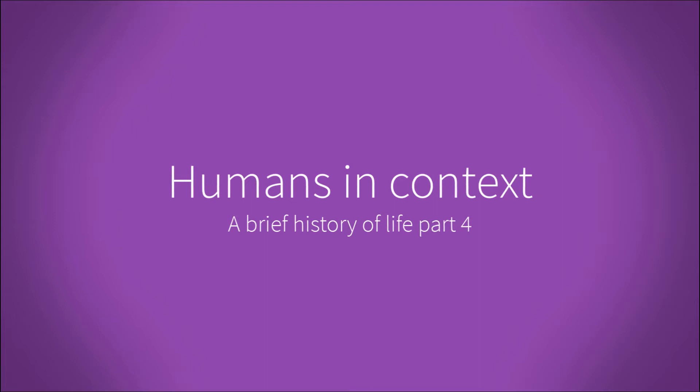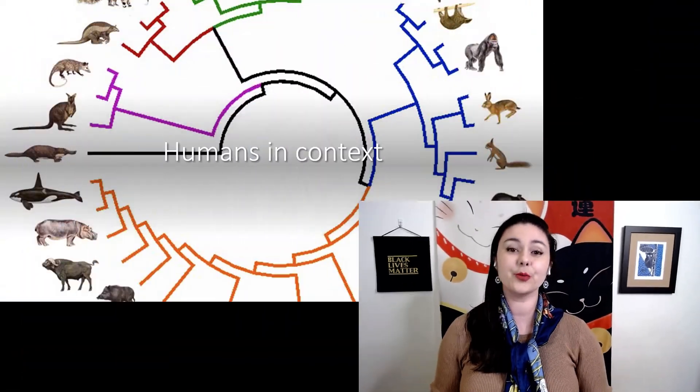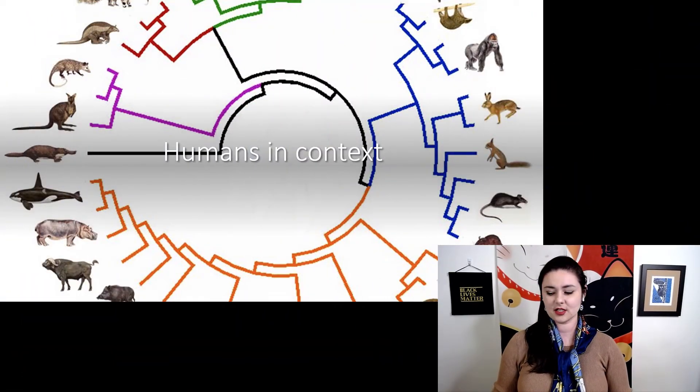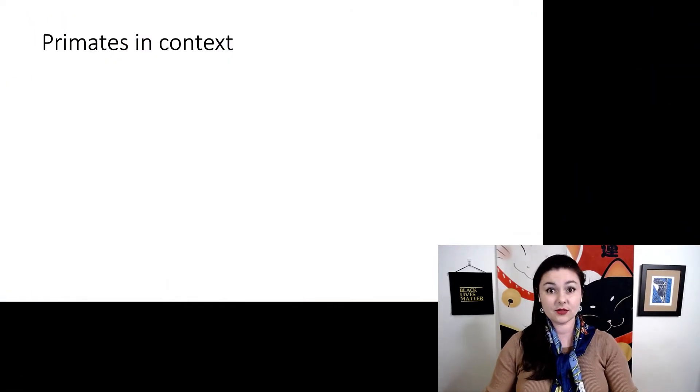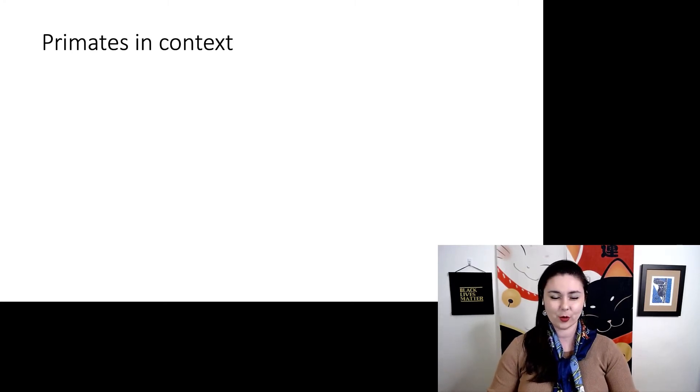Now that we're familiar with all of life and the different traits that different groups of animals have, let's put this all in context with what we share with other groups of animals. We're going to put humans in context. Let's first talk about primates and what primates share with other groups of organisms.